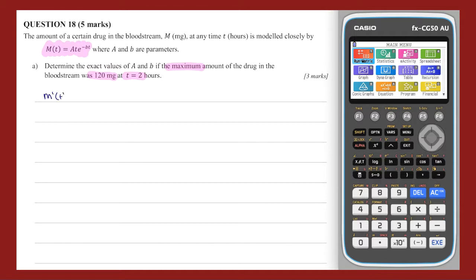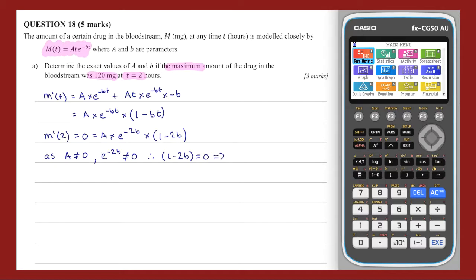Using the product rule, m'(t) equals A times e to the negative bt plus At times e to the negative bt times negative b. Given the common factor, this can be rewritten as A times e to the negative bt times (1 minus bt). As the maximum occurs at time t equals 2, m'(t) of 2 is equal to 0. From this, A times e to the negative 2b times (1 minus 2b) is equal to 0. As A is not equal to 0, or otherwise the entire model is reduced to 0, and e to the negative 2b is not equal to 0, therefore 1 minus 2b must be equal to 0, and hence b equals one half.